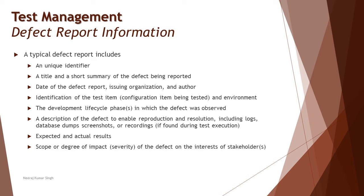Number one: a unique identifier — an ID that uniquely identifies each defect. Number two: a title and short summary of the defect being reported, capturing what the defect was and when it was reported. Number three: date of defect report, issuing organization, and author. The date is important for tracking how long it takes to resolve defects. Issuing organization indicates who found the defect — it's not only the testing team; other stakeholders can share this responsibility too.